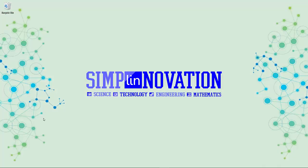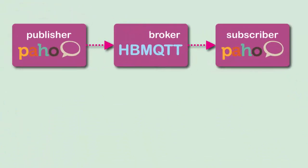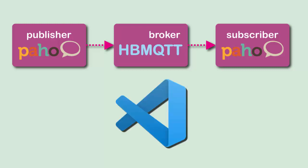Hi everyone, welcome back to SimplyNovation. In this video I'm going to show you a step-by-step tutorial on how to create your own Python-based MQTT broker and its client. I'll use the hbmqtt package to create an MQTT broker, and paho-mqtt to create a client, a publisher, and a subscriber. I'll use Visual Studio Code as my editor — you can use any editor like PyCharm or Thonny IDE. Let's get started.